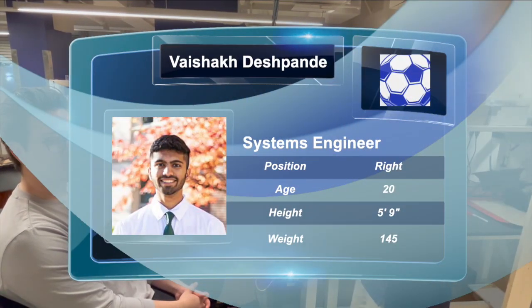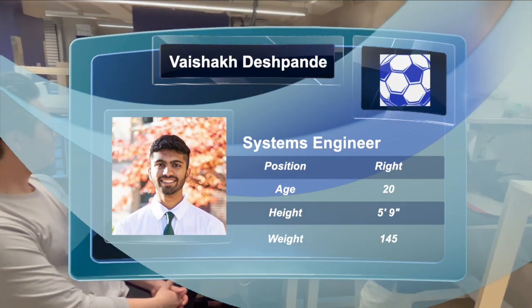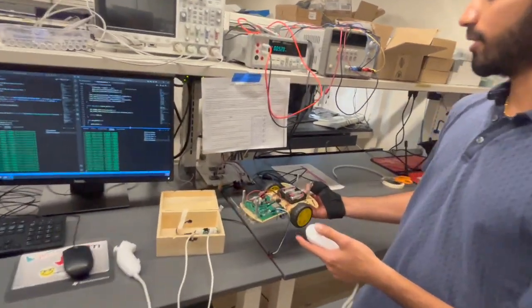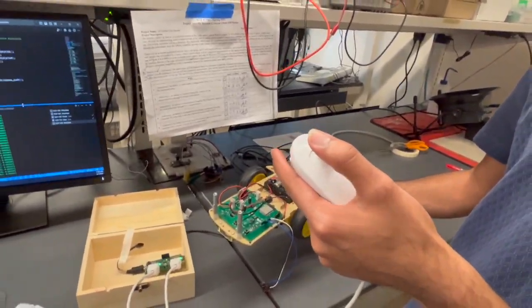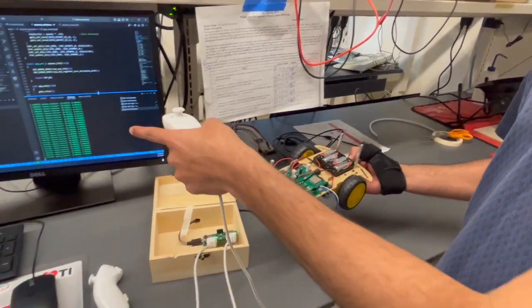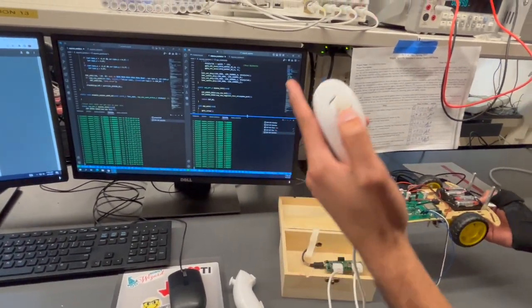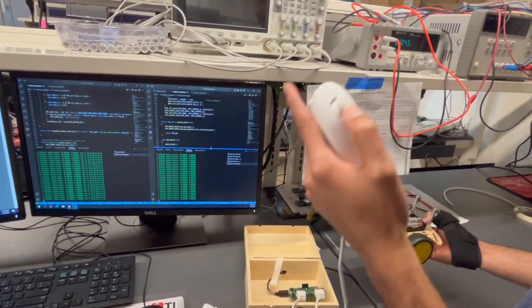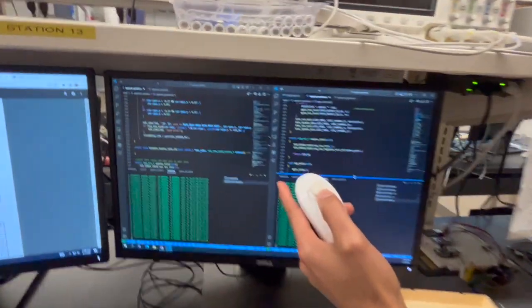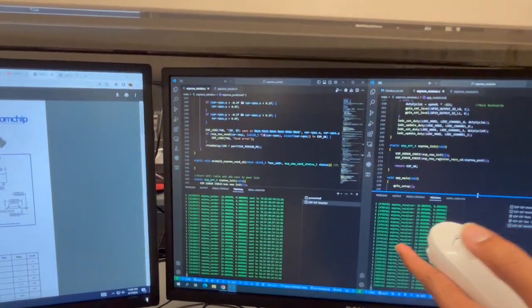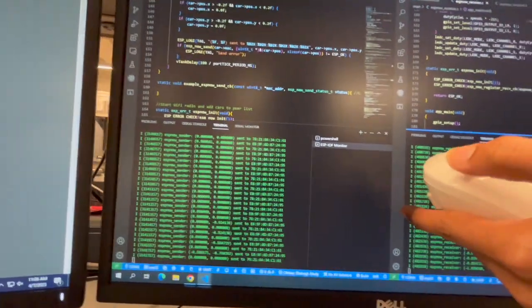Hello, my name is Vaishwak. I'll be talking about PSSC 4, which is the ability to communicate movement commands from the Wii Nunchuck to the car wirelessly through ESP-now. As Peter mentioned, we have established I2C communication with the Nunchuck. We're now translating the movement in the Nunchuck to its respective X and Y components.